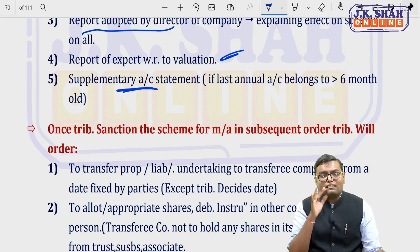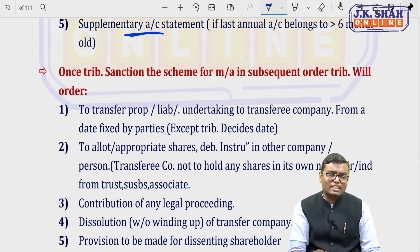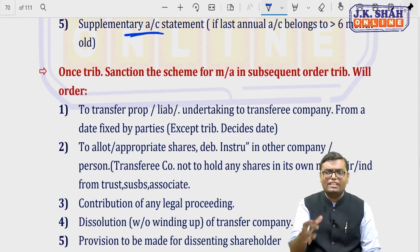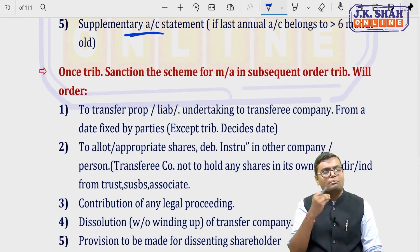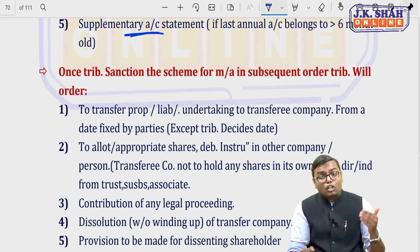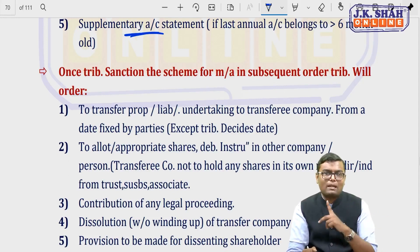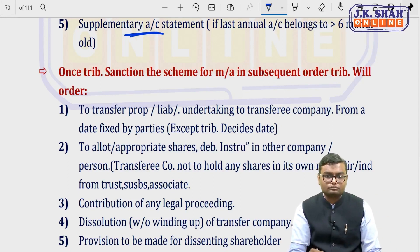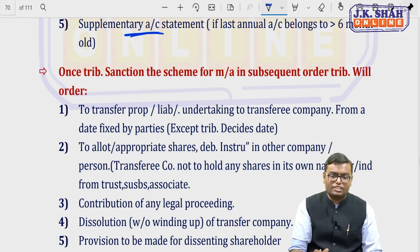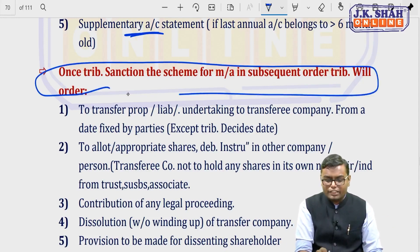Once the tribunal sanctions the scheme of merger or amalgamation — after the section 230 process, meeting, voting with majority in numbers and 75% in value approving, and the tribunal passing the approval order — the tribunal will then pass a second specific order for the merger or amalgamation under section 232.